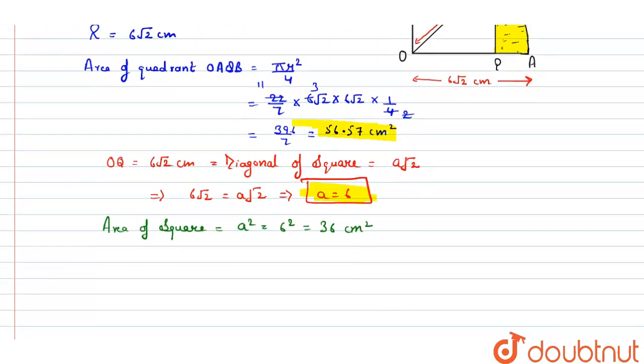Now area of shaded region is quadrant minus square. So required area equals 56.57 minus 36, which equals 20.57 square centimeter. This is our required area which we have to find. Thank you.